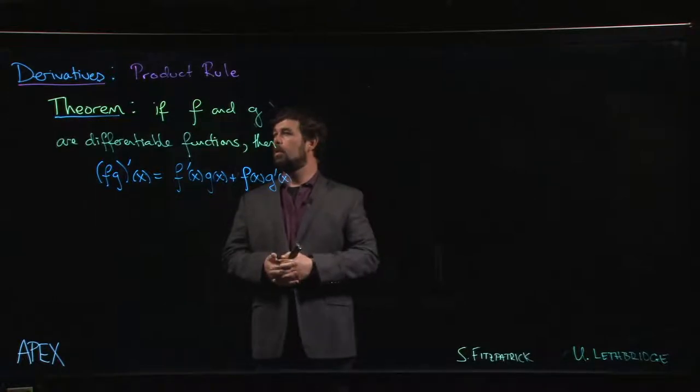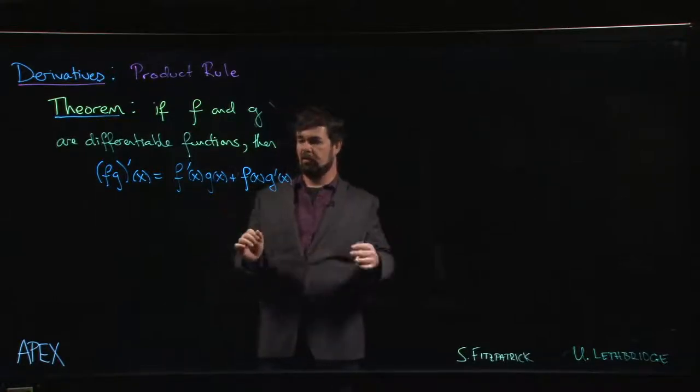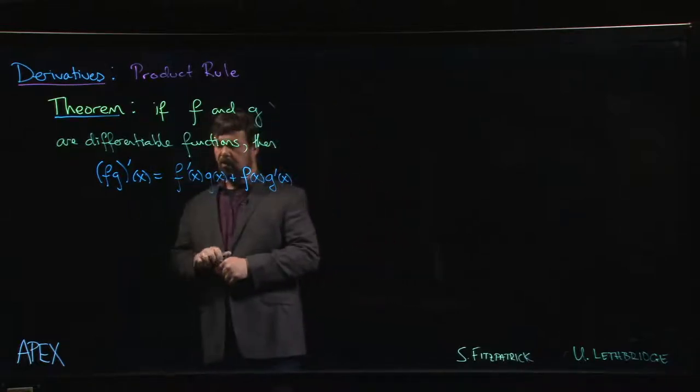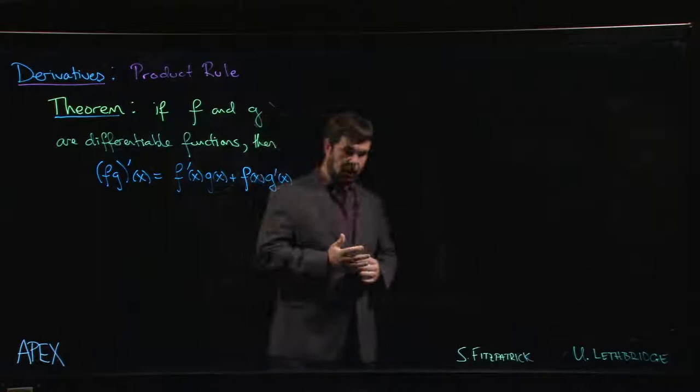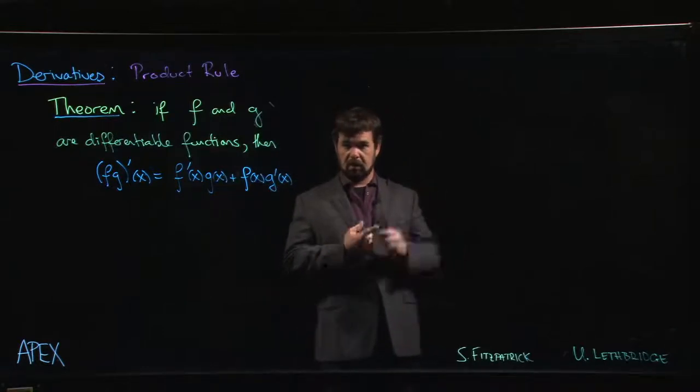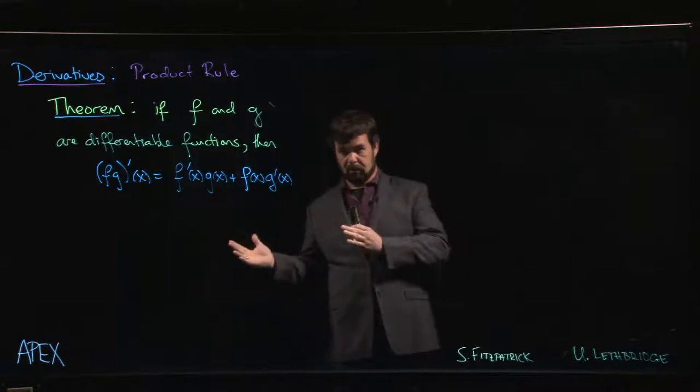We're going to move on now and look at the product rule for derivatives. This is where derivatives start getting slightly more complicated than limits. So far we've seen that the derivative of a sum is the sum of the derivatives; if there's a constant inside you can bring it out. We have the same behavior for limits.